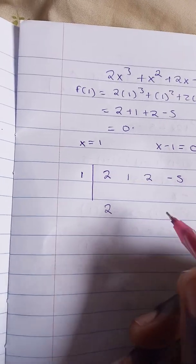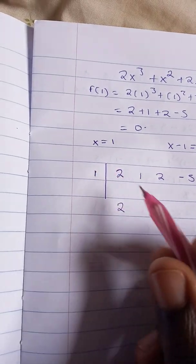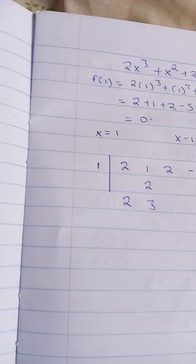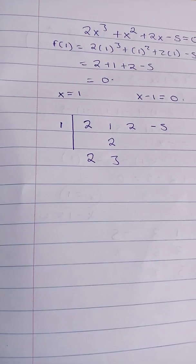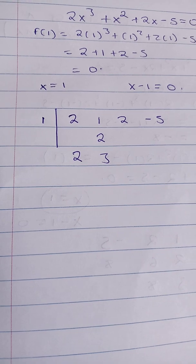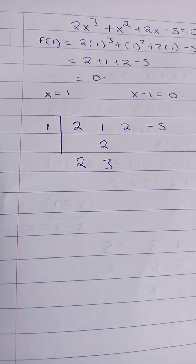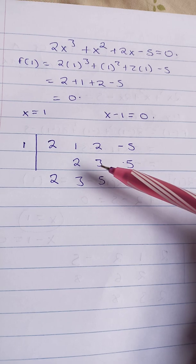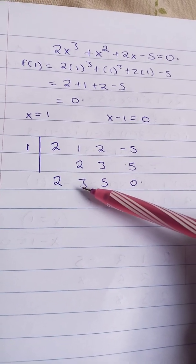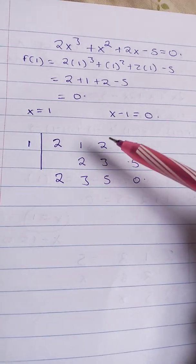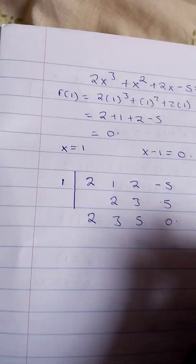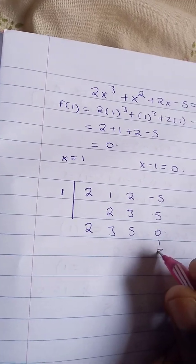So now we do the actual synthetic division by first of all dropping the 2. The 2 should be dropped, then multiply it with 1, which is 2. You add to get 3. Repeat the same procedure until the end. 1 + 2 = 3, so again 3 × 1 = 3, you add to get 5. 5 × 1 is 5, negative 5 + 5 is 0. As I said in my previous video, the last part is the remainder.